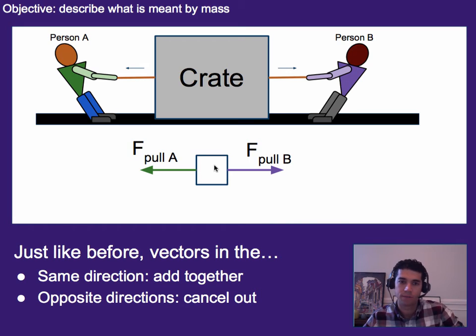Now just like before, since force is a vector that means they can add together if they're in the same direction. So if we had two forces over here on the right they would make a bigger force in this direction. Or we can have forces in opposite directions cancel out. So in this case we actually have a force from person B in the opposite direction of the force from person A and so they cancel out and this crate likely wouldn't go anywhere.